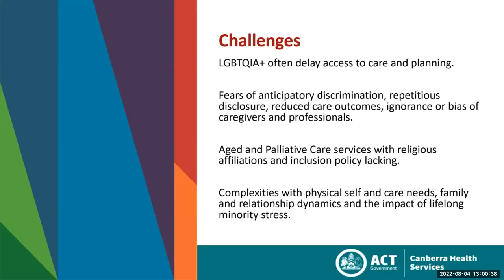ACON did a fantastic response to the advanced care planning national framework and outlined the challenges and concerns of communities specific to advanced care planning. A lot of it was to do with aged care and palliative services not being able to be inclusive. A lot of it was that fear of anticipatory discrimination, repetitious disclosure, reduced care outcomes, and ignorance and bias. It results in people hiding their sexuality and subsequent poorer health outcomes, and there's a real lack of understanding of family structures, which exposes people to the risk of having their wishes ignored.